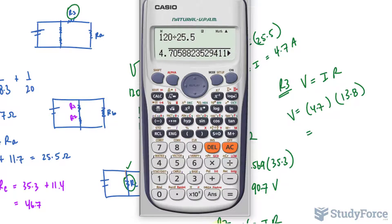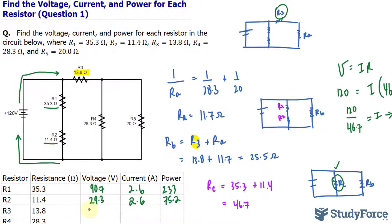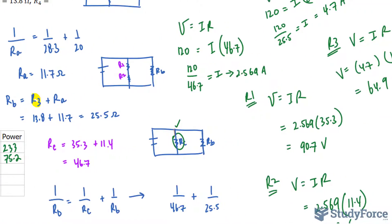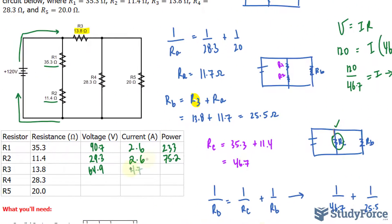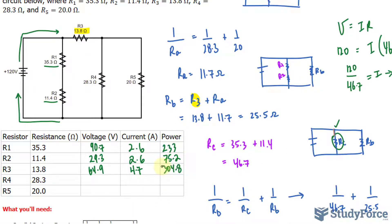64.86 is roughly 64.9 volts. Let's write that in: 64.9 into the chart. The current is 4.7, and multiplying these two values gives you the power. 64.9 times 4.7 gives us 304.8. You may also round this to 305 if you like.